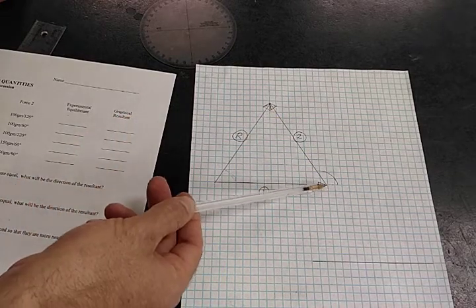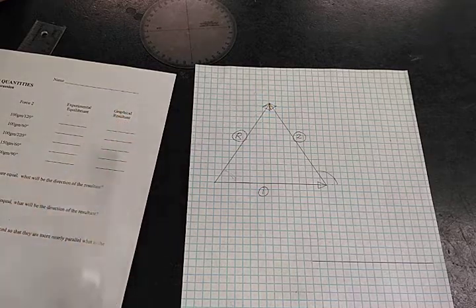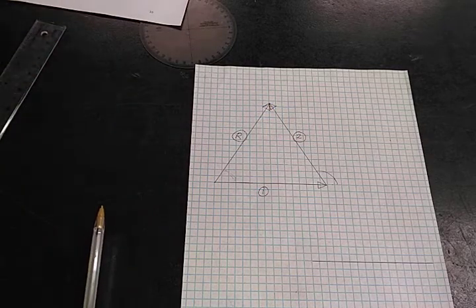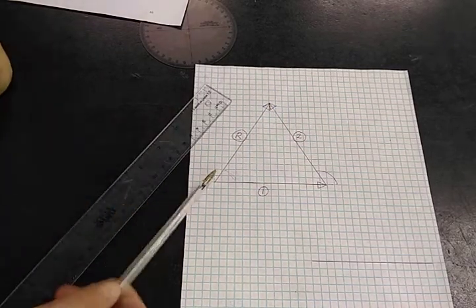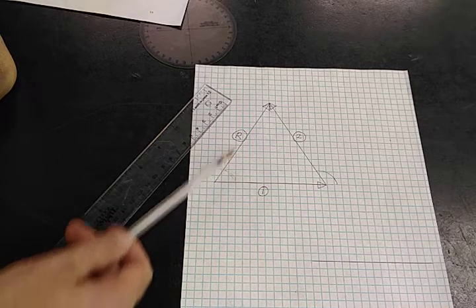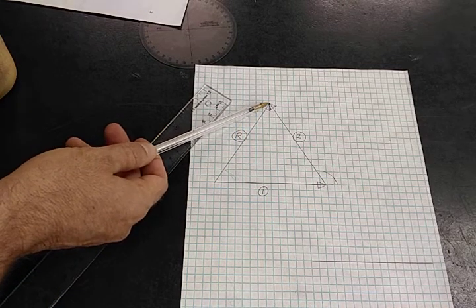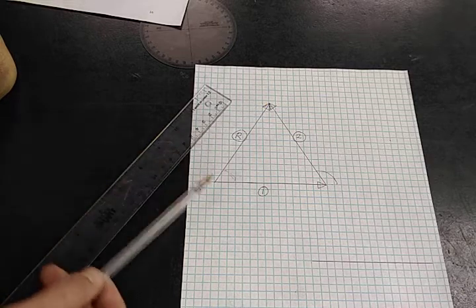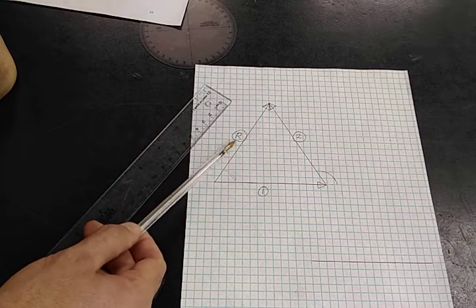I add force vector 1 to force vector 2. And now, I've already drawn it in here, the resultant vector. The resultant vector starts where we started the addition and ends where the addition ends. And so here it is, there's our resultant vector.